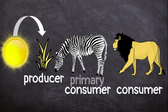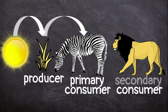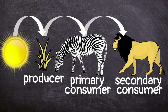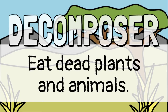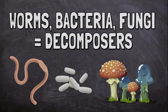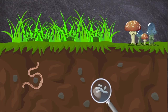The zebra is a primary consumer because it gets its energy directly from the producer, the grass. The lion is a secondary consumer because it's farther up the food chain — the energy has to pass from the grass, to the zebra, and then finally to the lion. Decomposers eat dead plants and animals. Worms, bacteria, and fungi are examples of decomposers. They put energy back into the soil for plants to use again.